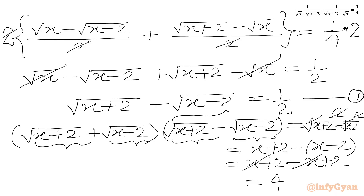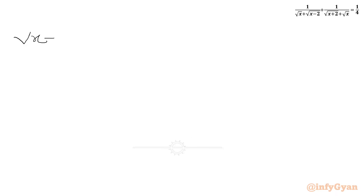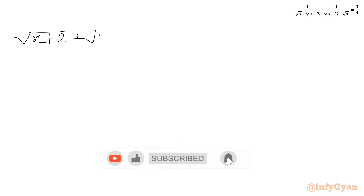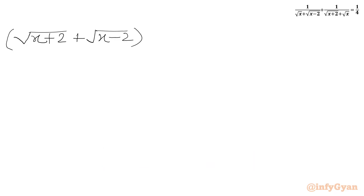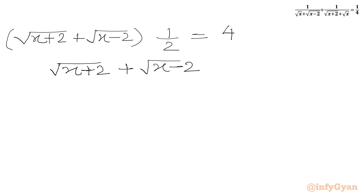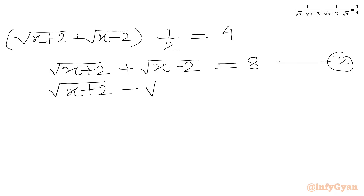This is our equation number 1. Plugging in, this bracket equals 1 over 2. So we can write the second equation: square root (x plus 2) plus square root (x minus 2), times 1 over 2, as per equation 1, equals 4. Multiplying both sides by 2 gives us equation 2: square root (x plus 2) plus square root (x minus 2) equals 8. And equation 1 is: square root (x plus 2) minus square root (x minus 2) equals 1 over 2.